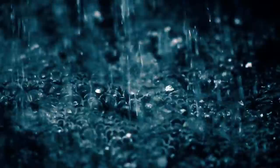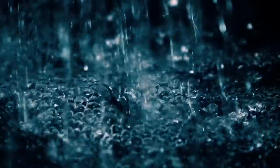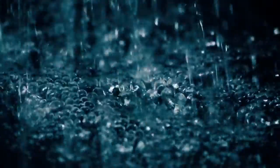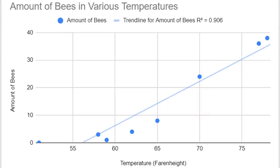I understand some of this data could be unreliable, because there were two days where I needed to collect information and it was raining outside. On these days, the bees were most likely affected by the rain rather than the temperature. This was my graph, and I made it a scatter plot because I wanted to see if there was a correlation between temperature and amount of bees.